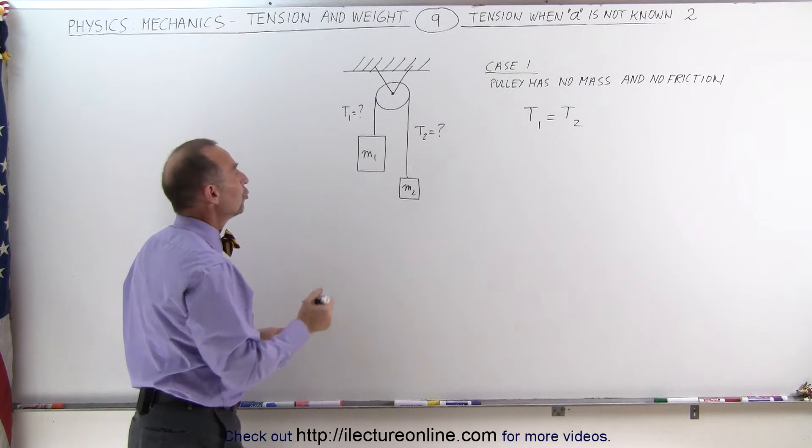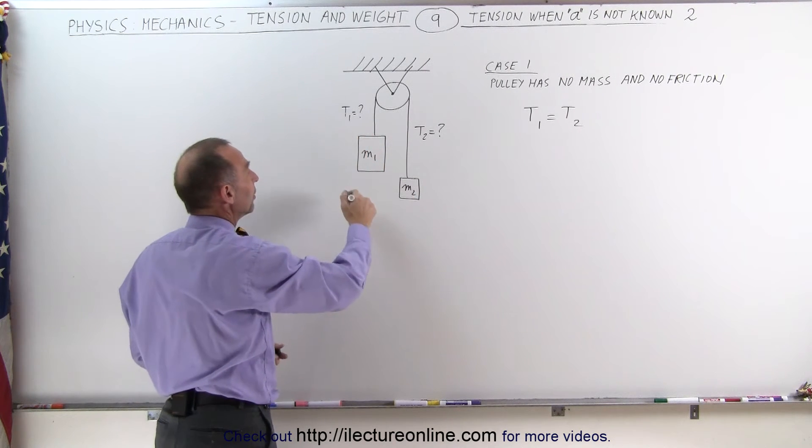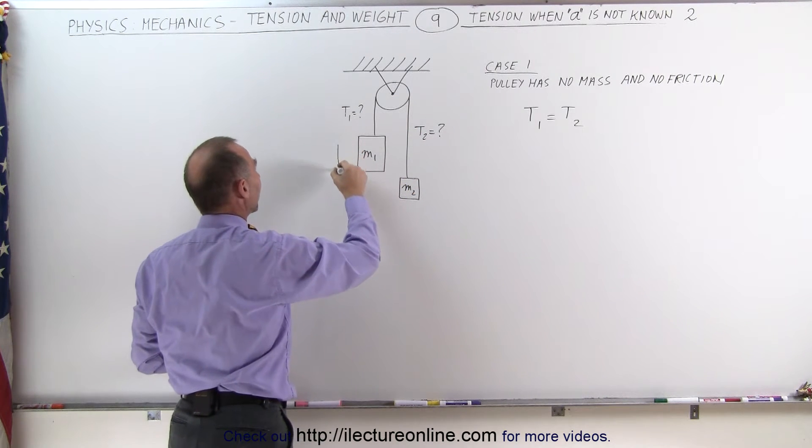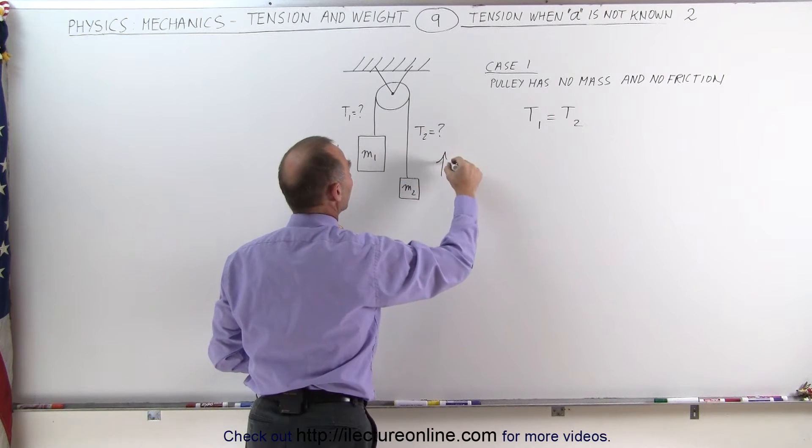And we can assume that M1, being the heavier of the two objects because it's much bigger, will cause the whole system to accelerate in this direction. So on the left side the acceleration will be downward and on the right side the acceleration will be upward.